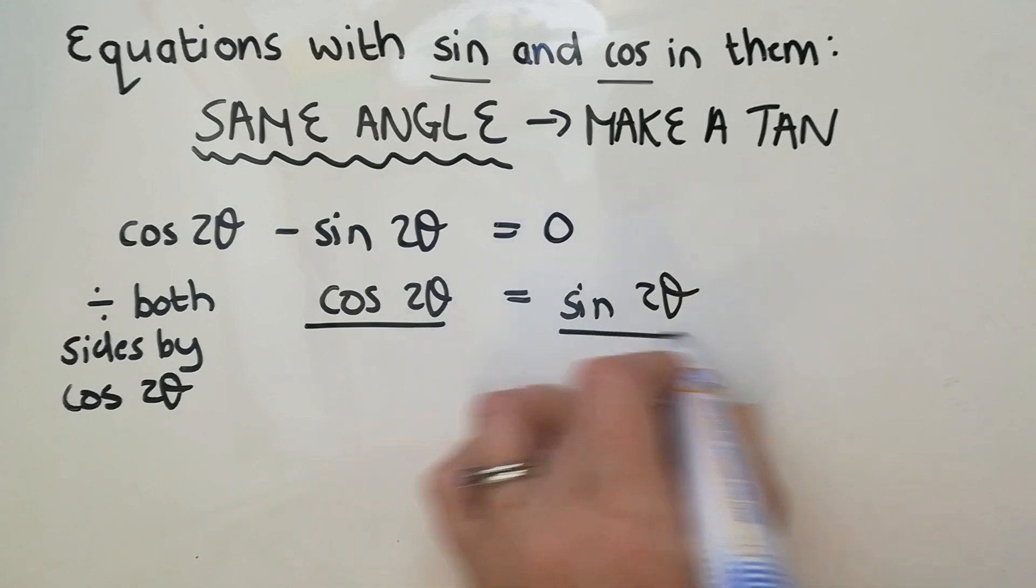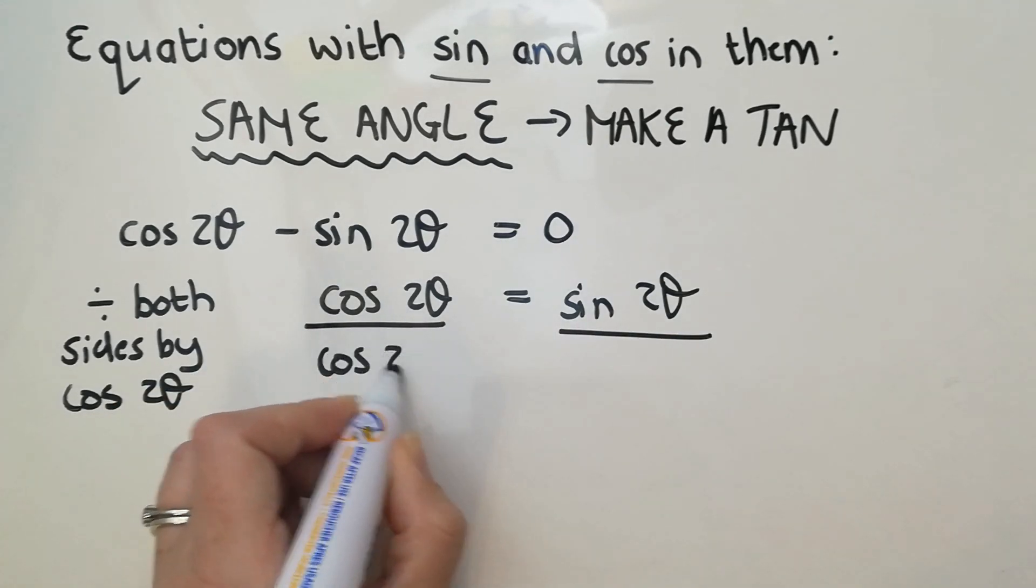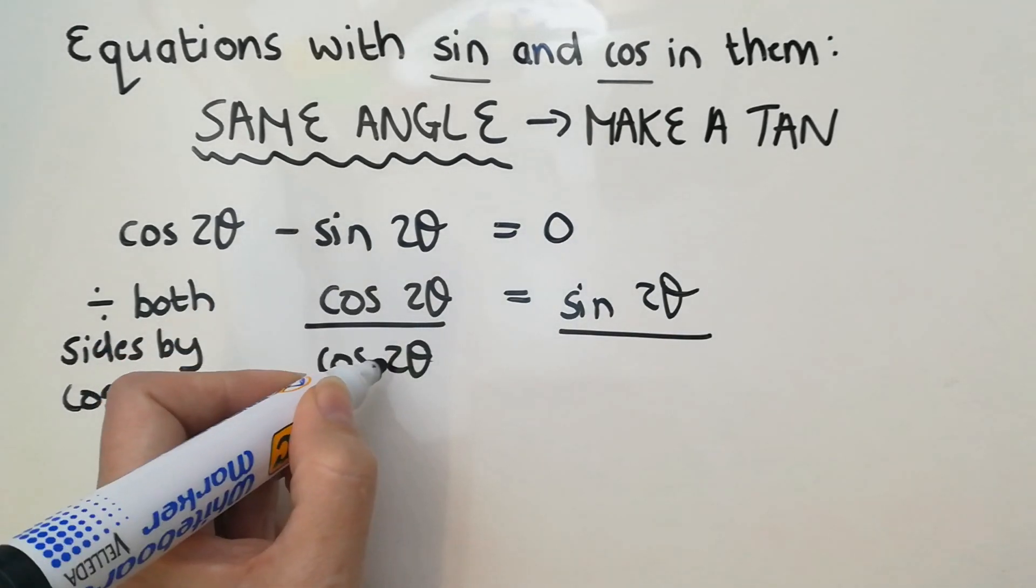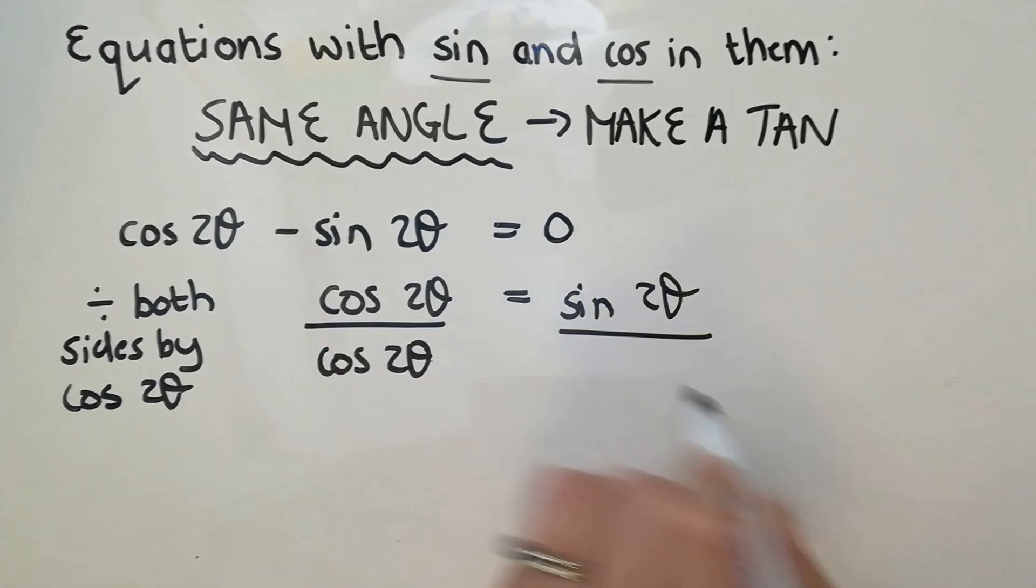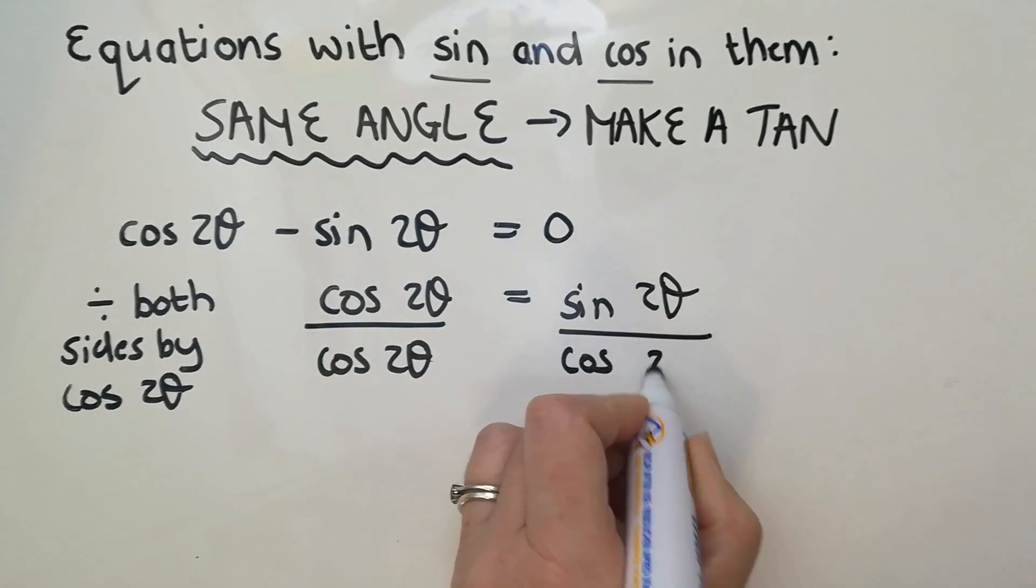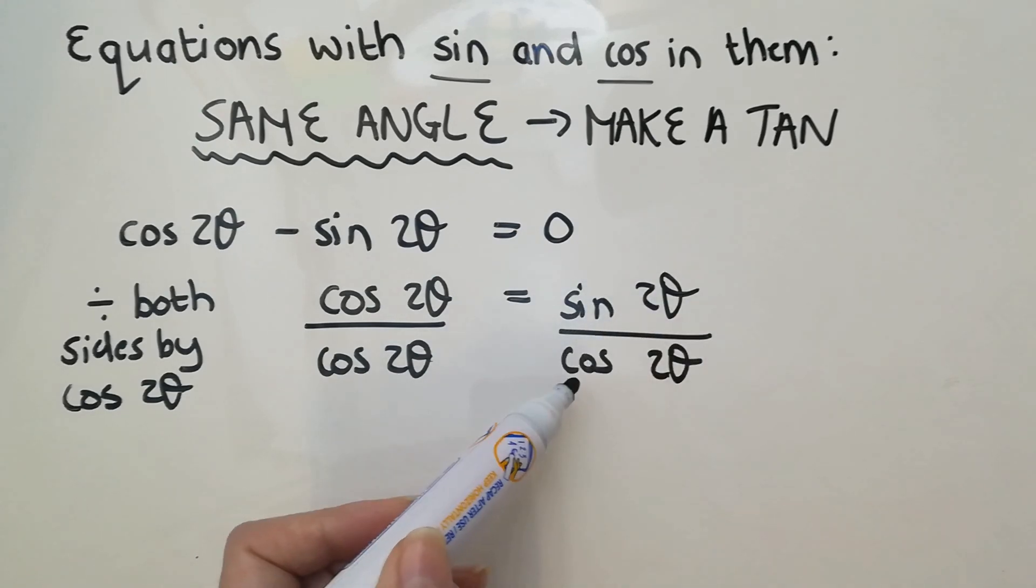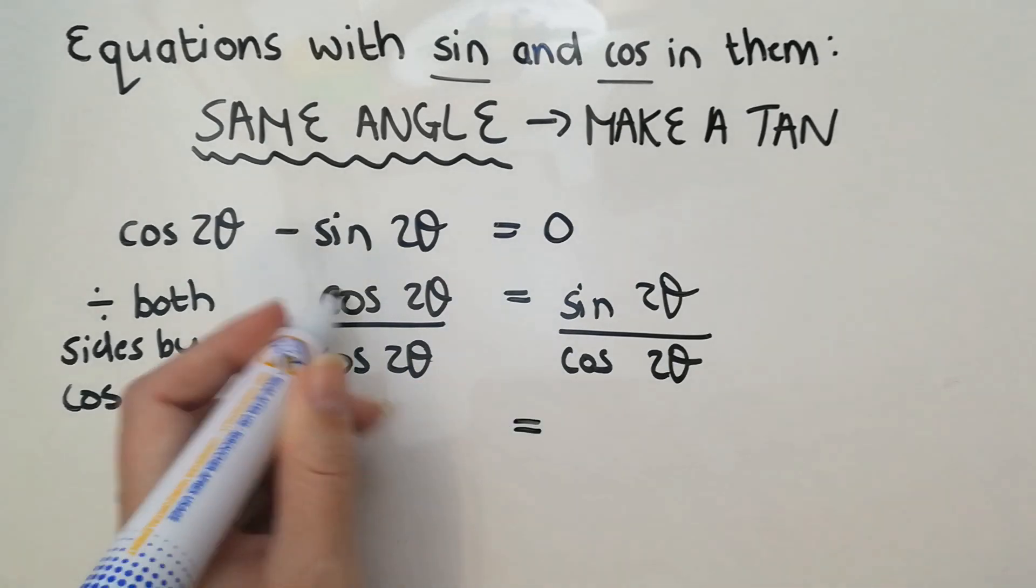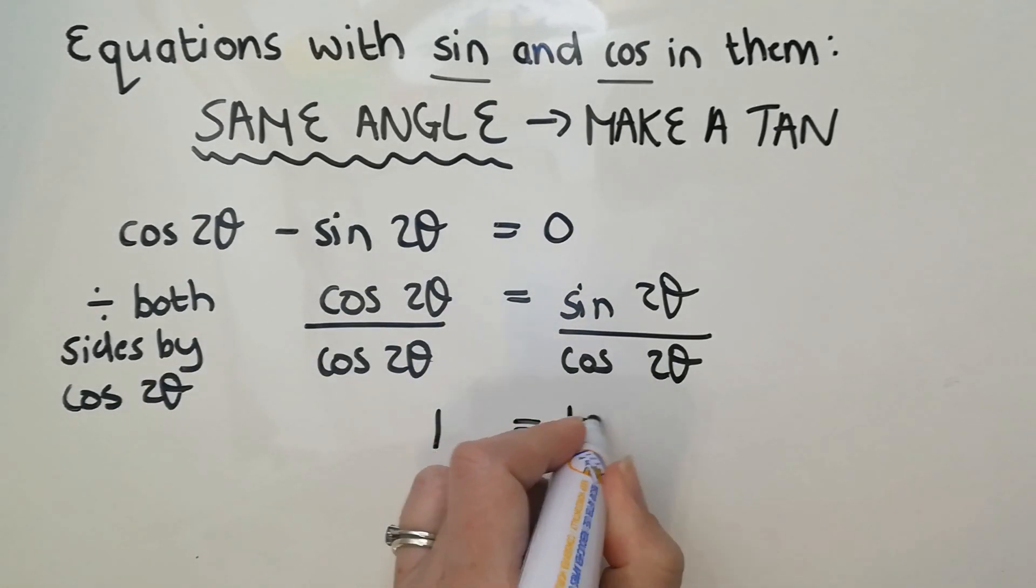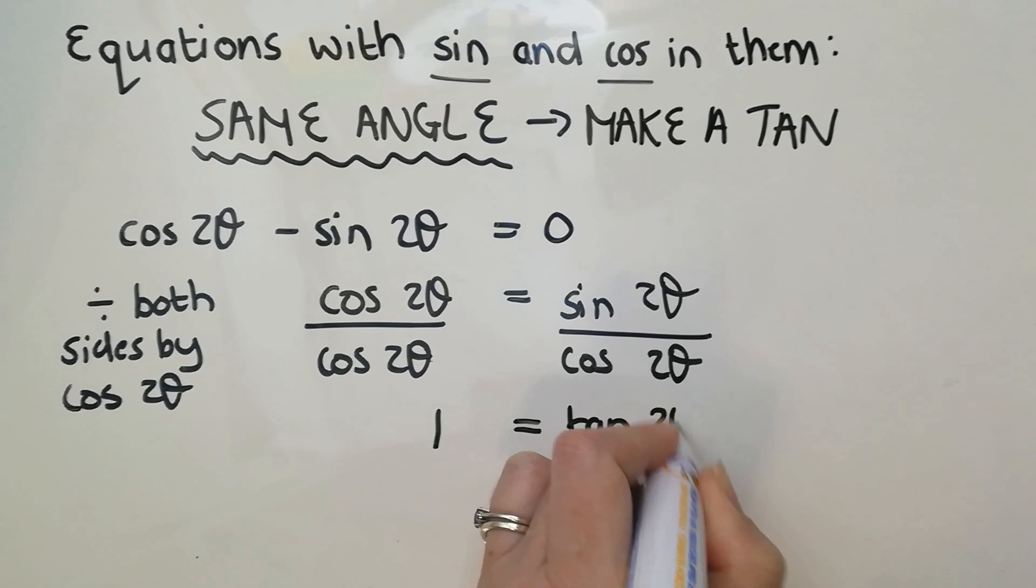Look what happens when I do that. What does that become? One, right? And this one? Well, it's sine of an angle over cos of the same angle. So that makes your tan. So what I've got now is 1 equals tan of 2θ.